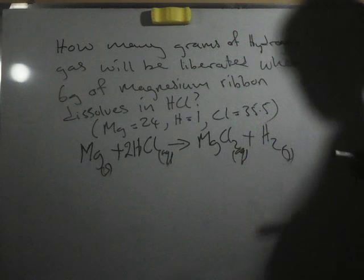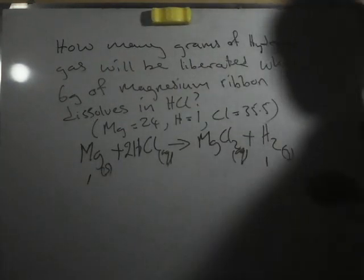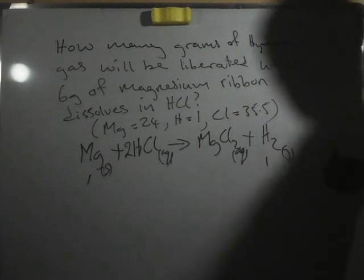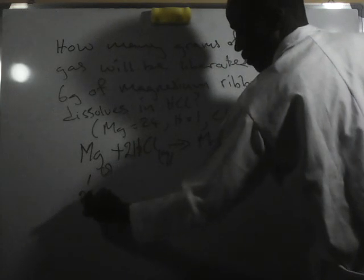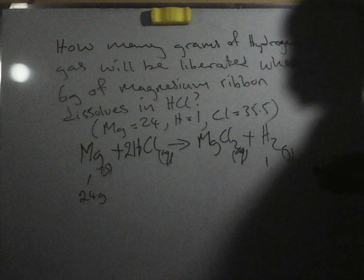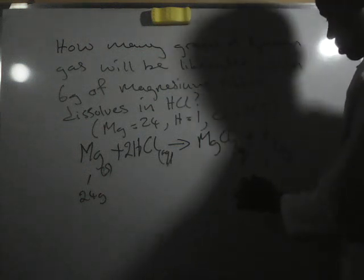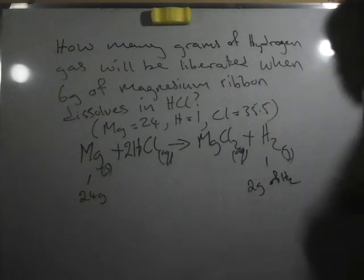It means that one mole of magnesium ribbon will displace one mole of hydrogen gas. That means 24 grams of magnesium liberates 2 grams of hydrogen gas.